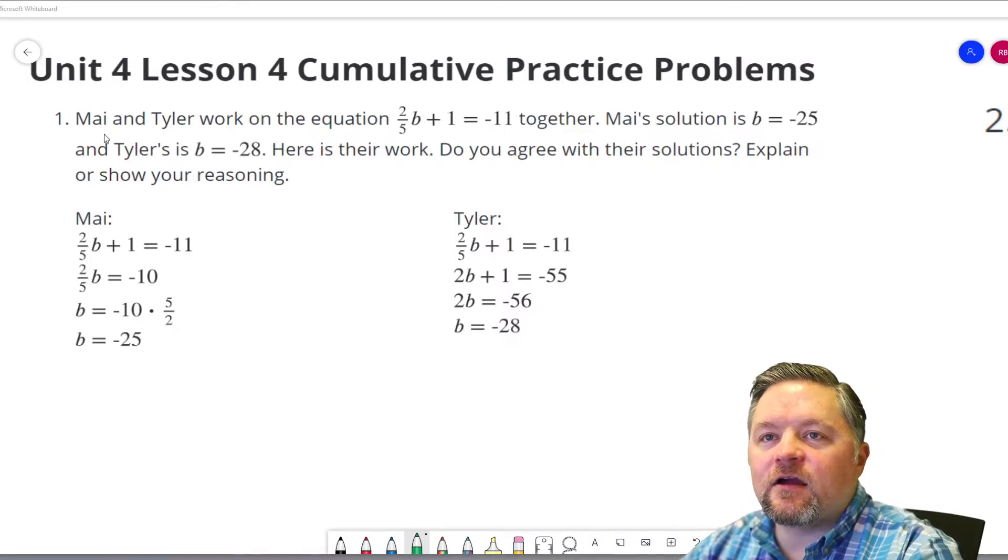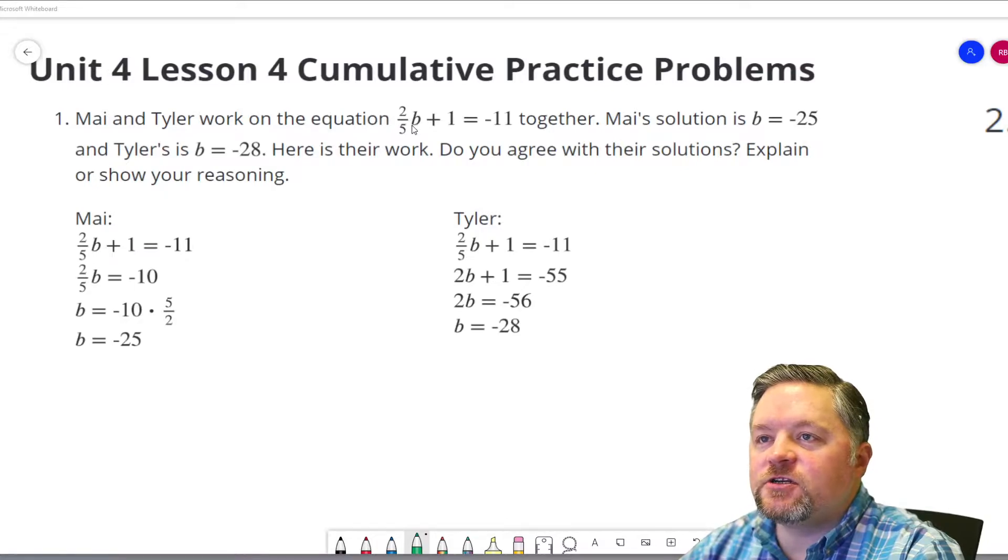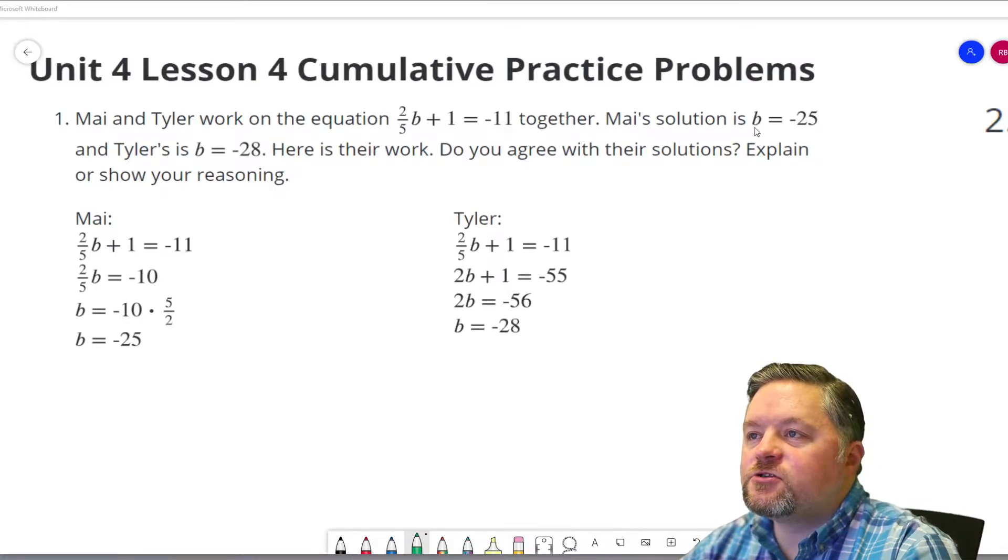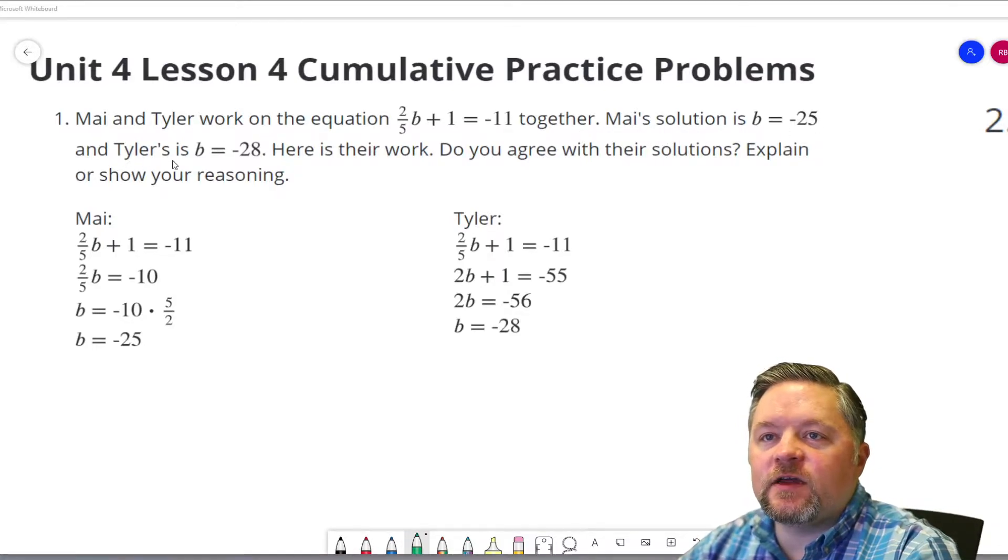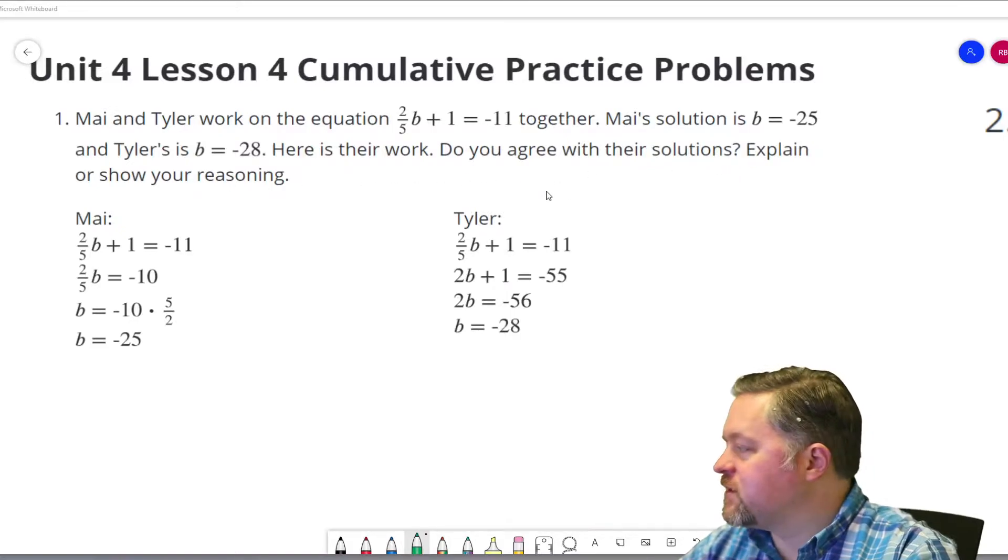Okay, our first question here says, Mai and Tyler work on the equation 2 fifths b plus 1 equals negative 11 together. Mai's solution is b equals negative 25 and Tyler's is b equals negative 28. Here's their work. Do you agree with their solutions? Explain or show your reasoning.